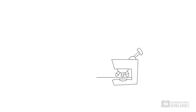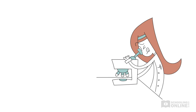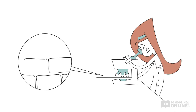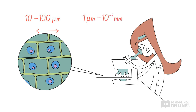Like all living things, eukaryotes, including plants, are made of one or more cells. They can be unicellular or multicellular. In general, eukaryotic cells, such as plant cells, are larger and more complex than prokaryotic cells, ranging from 10 to 100 micrometres in size. One micrometre is equal to one thousandth of a millimetre, or one millionth of a metre.